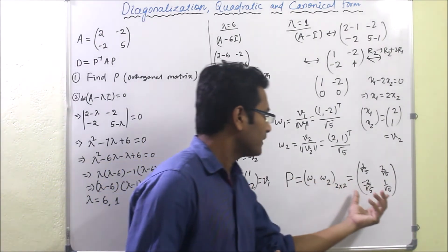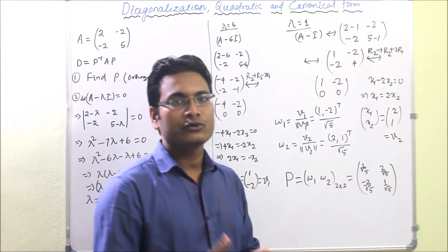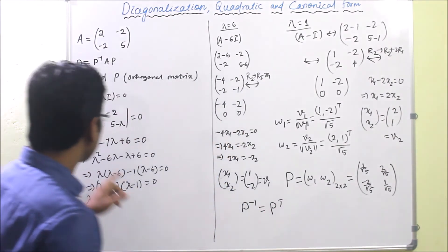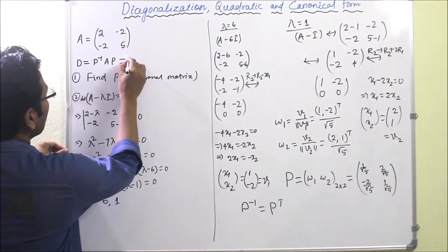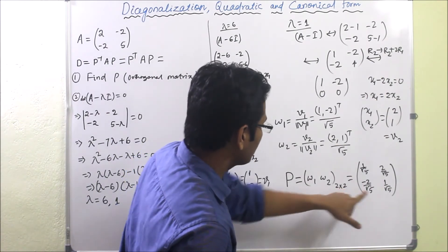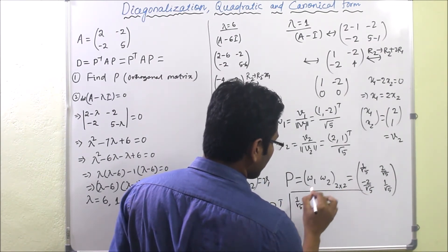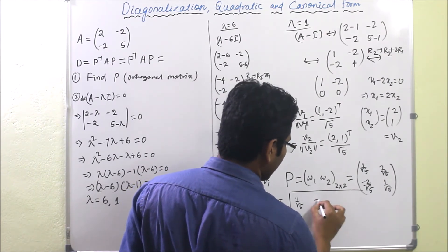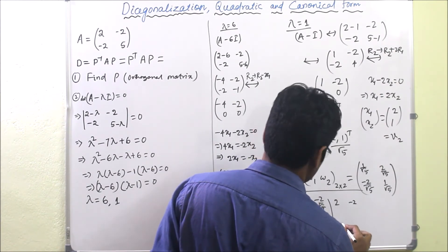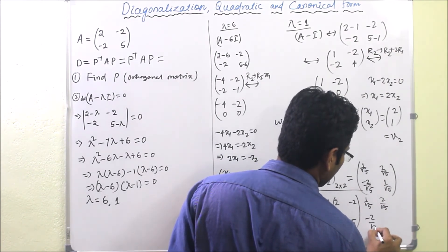For an orthogonal matrix, P⁻¹ = Pᵀ, so we compute D = PᵀAP. Here Pᵀ = [[1/√5, 2/√5], [−2/√5, 1/√5]], A = [[2, −2], [−2, 5]], and P = [[1/√5, 2/√5], [−2/√5, 1/√5]]. We first multiply Pᵀ × A, computing each entry of the intermediate matrix.